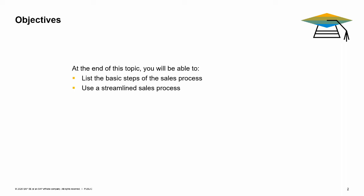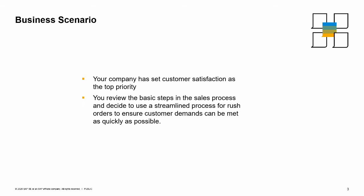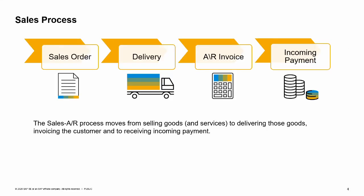Imagine that your company has set customer satisfaction as its top priority. You review the basic steps in the sales process and decide to use a streamlined process for rush orders to ensure that customer demands can be met as quickly as possible. The sales AR process moves from selling the goods and services, to delivering those goods, to invoicing the customer for their purchases, to the last step in accounting of receiving the incoming payment.